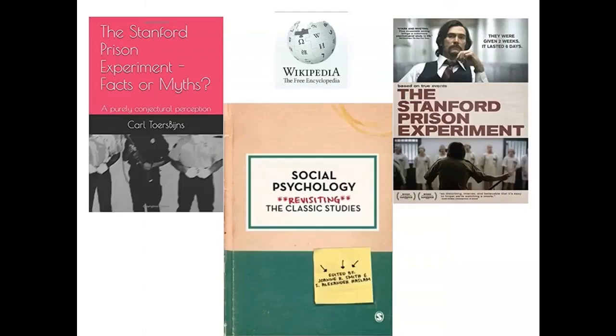There have also been books written about the Stanford Prison Experiment by others, as well as magazine articles and even a Hollywood film. Secondary sources such as these are not the first-hand accounts like primary sources, but they may provide helpful summary, analysis, and historical context.